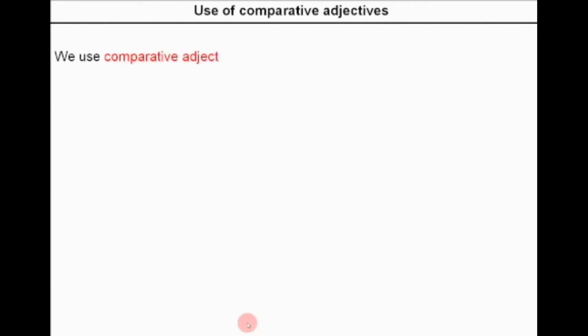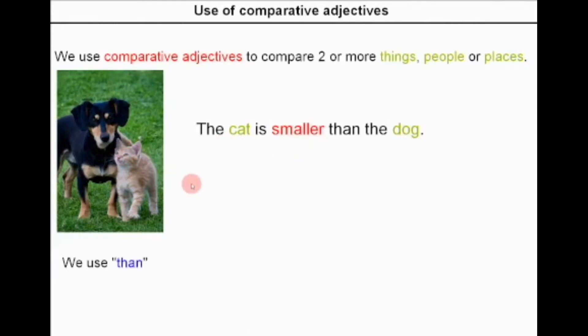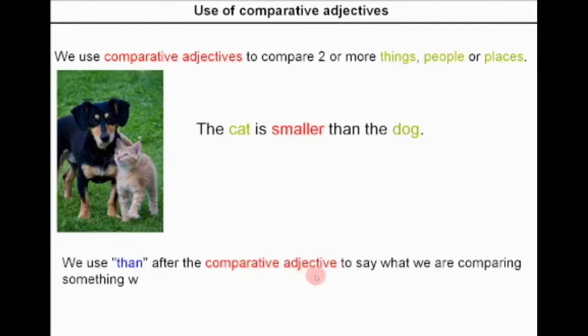Now let's turn to the degrees of comparison of adjectives. Let's look at the comparative adjectives. We use comparative adjectives to compare two or more things, people, or places. For example, the cat is smaller than the dog. We see two animals that we are comparing. We use 'than' after the comparative adjective to say what we are comparing something with. The word 'than' comes after the comparative adjective and before the second thing we are comparing.